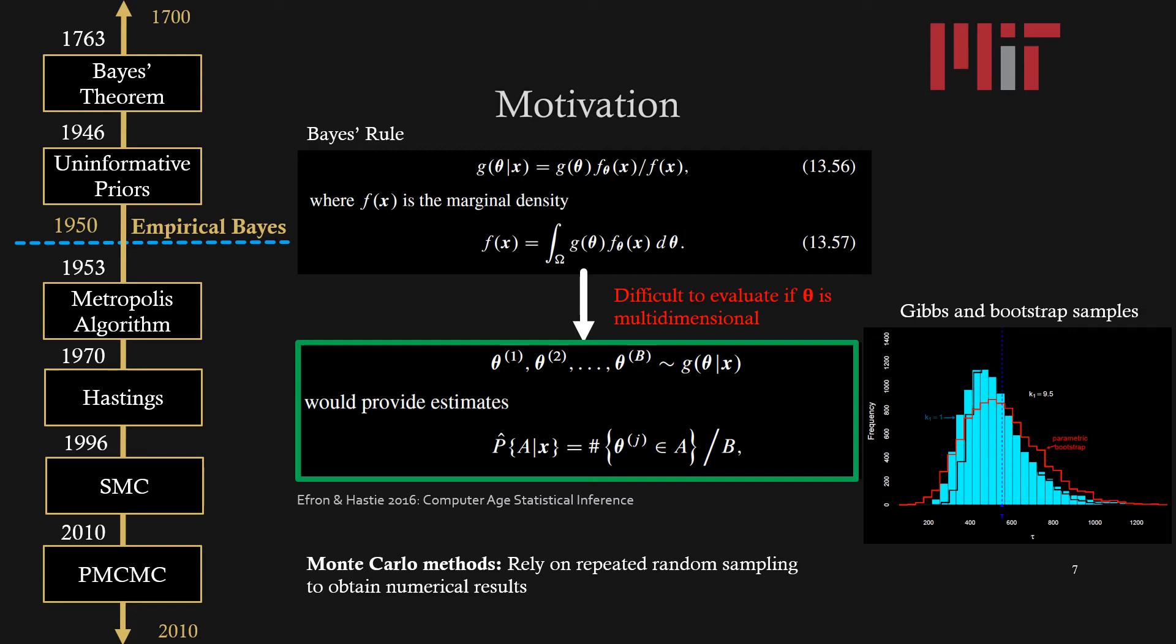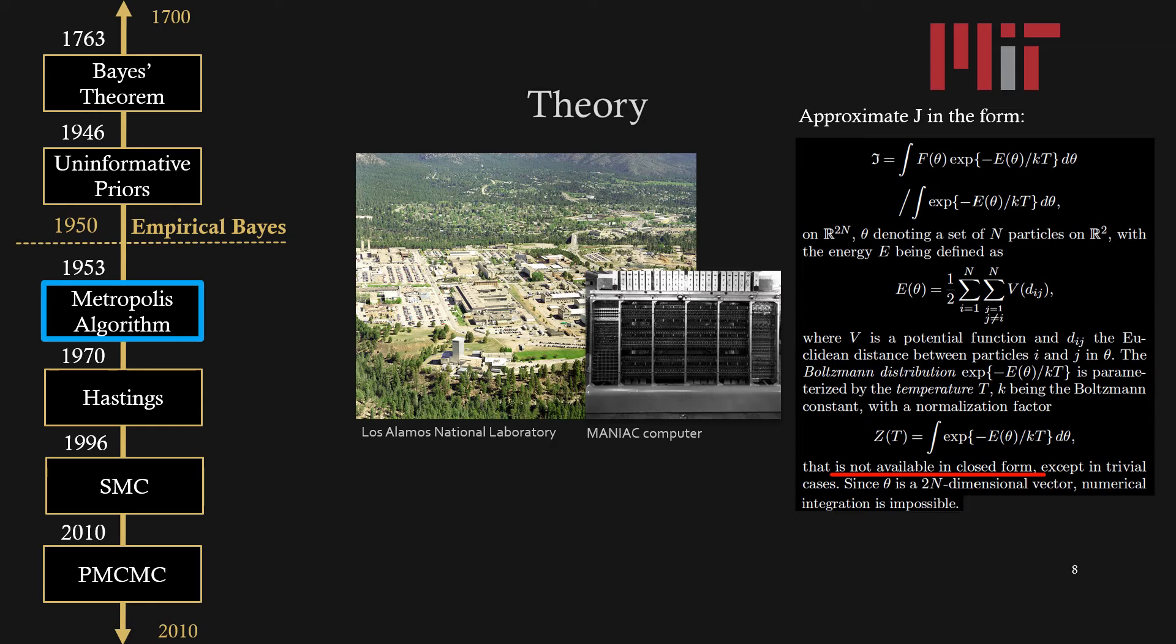The beginnings of MCMC started in 1953 at Los Alamos National Laboratory on the MANIAC one computer. The goal at the time was to approximate J in this form, which is integrals that describe the equilibrium between the liquid and gas phase of substances. As you can see, the energy can be defined as well as the normalizing factor. The issue for this computation was that the normalizing factor is not available in closed form, and so we can't compute or approximate on this value of J directly.